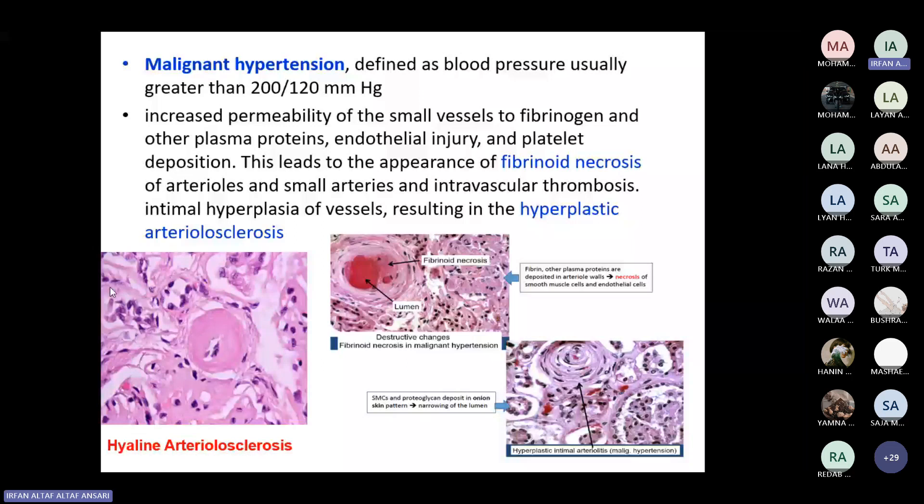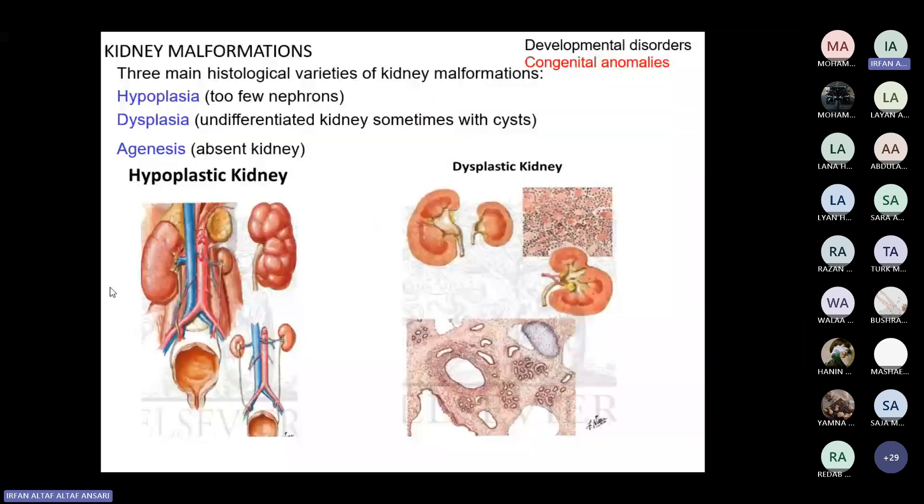Congenital kidney malformations include hypoplasia, dysplasia, and agenesis. We also have two important kidney malformations: autosomal dominant polycystic kidney disease (ADPKD) and autosomal recessive polycystic kidney disease (ARPKD).